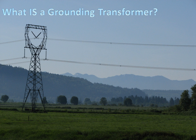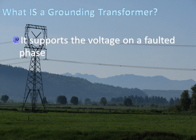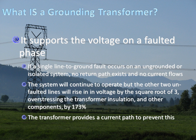A second function of grounding transformers is that it supports the voltage on unfaulted phases during fault events. If a single line-to-ground fault occurs on an ungrounded or isolated system, no return path exists for the current to flow. The system will continue to operate, but the other two unfaulted lines will rise in voltage by the square root of 3, which overstresses the transformer insulation of the components by nearly 200%. The grounding transformer provides a current path to prevent this.